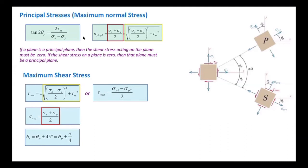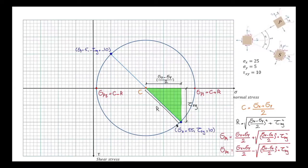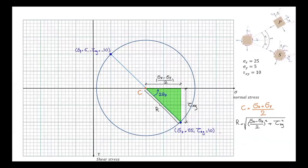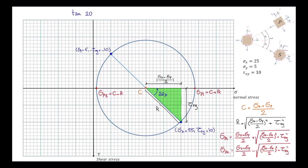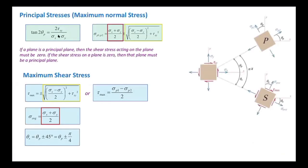The other equation we want to find is the tangent of 2 theta p — how much we need to rotate the stress element to reach the principal plane. The angle 2 theta p is shown on the circle, and tangent of 2 theta p equals tau xy divided by (sigma x minus sigma y divided by 2). Comparing this with the equation we previously had, it is exactly the same, confirming another equation using the graphical method.